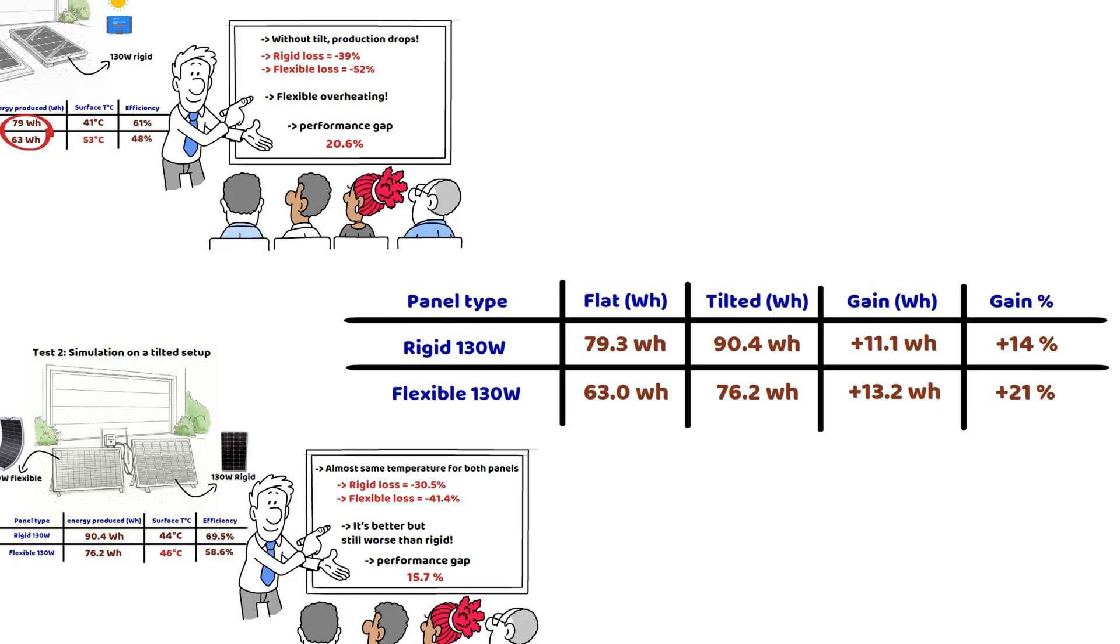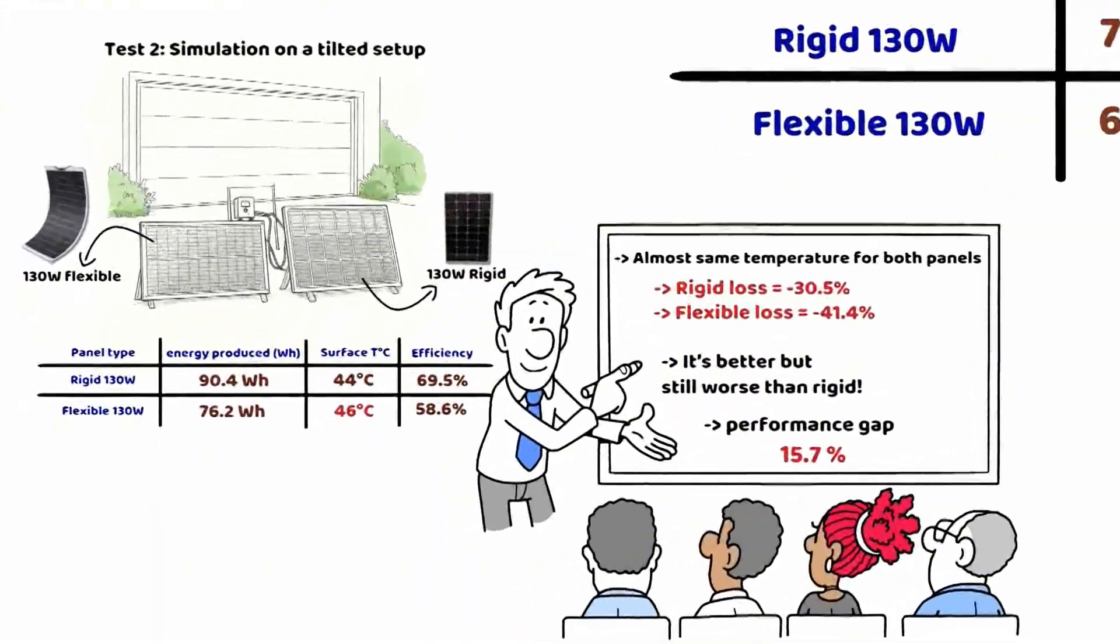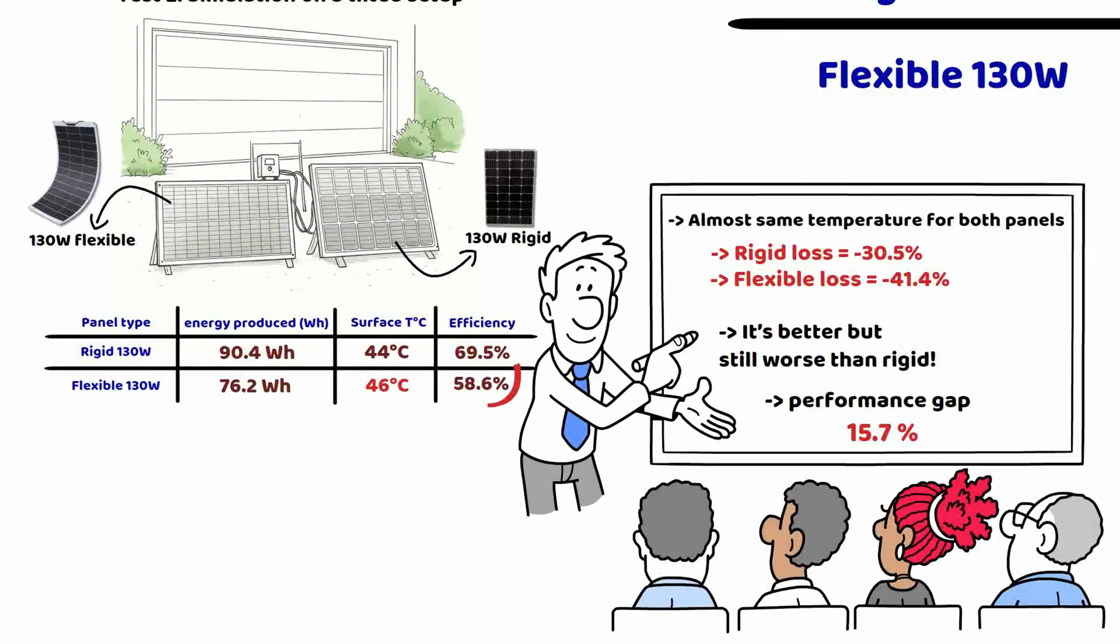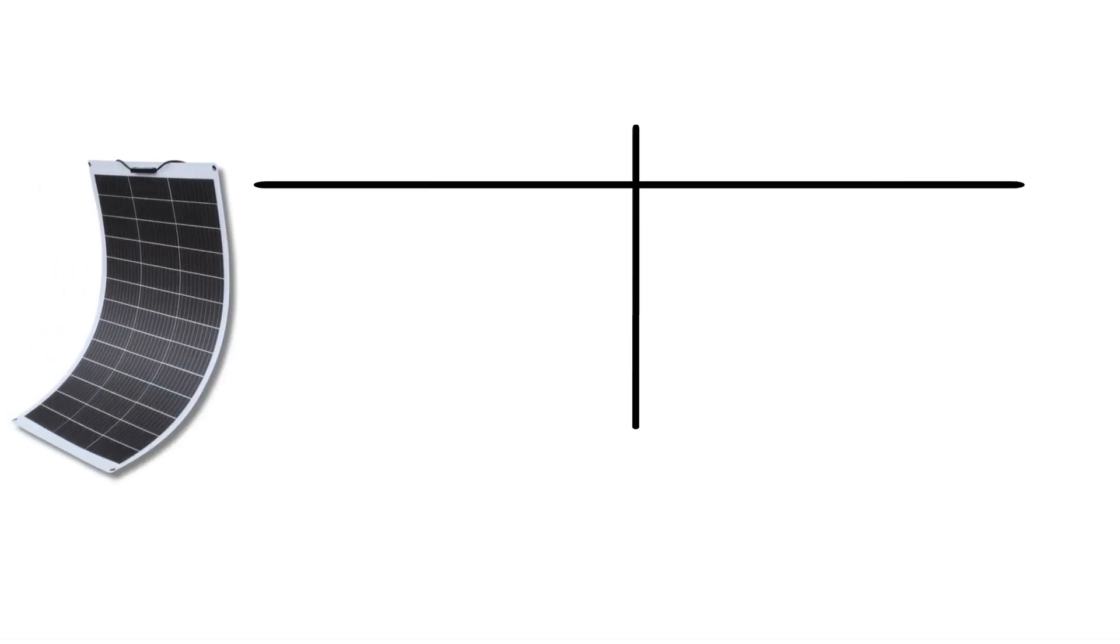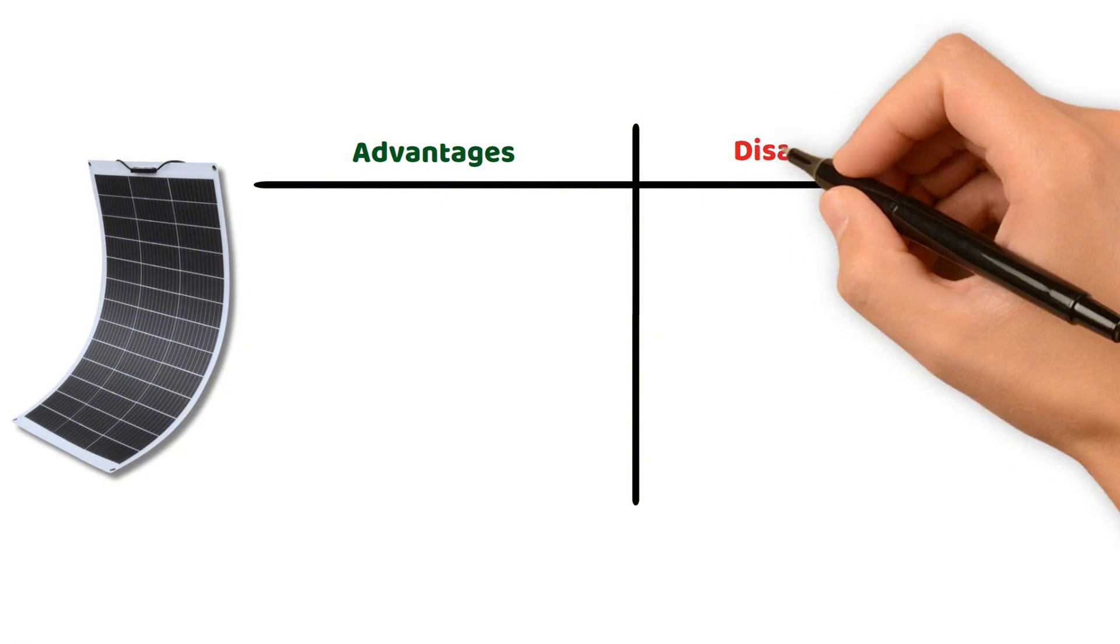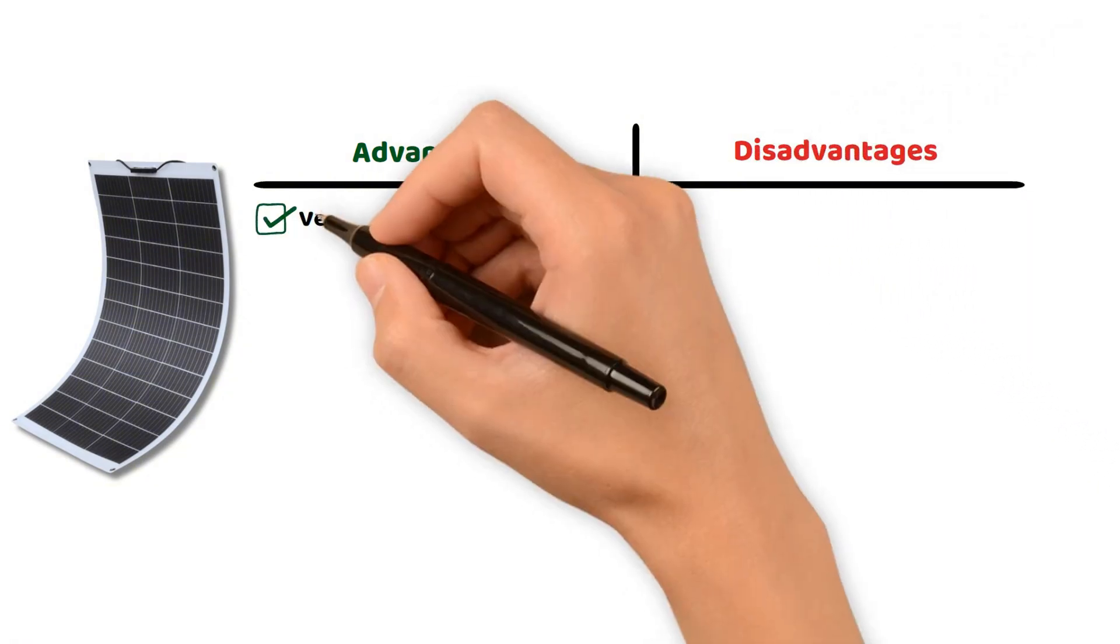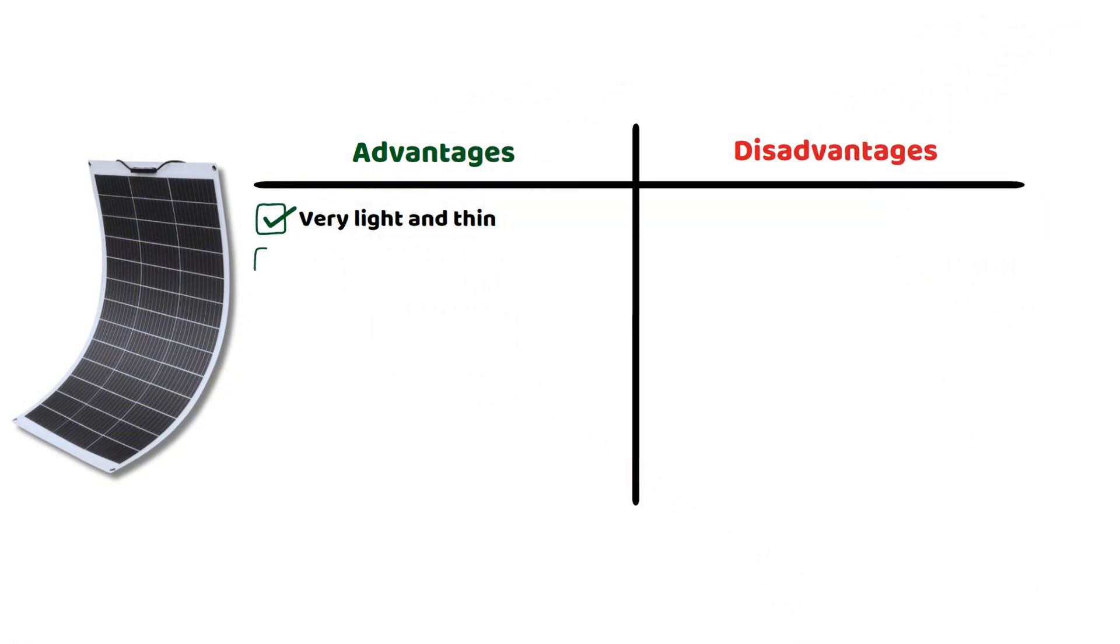But even if the rigid panel was far from being the best on the market, it still remains superior, even when both are ventilated and well-oriented. In summary, this 130-watt rigid panel can reach close to 70% real efficiency in ideal conditions, unlike the flexible panel, which does not go beyond 60%. Now let's go over the advantages and disadvantages of each type of panel.